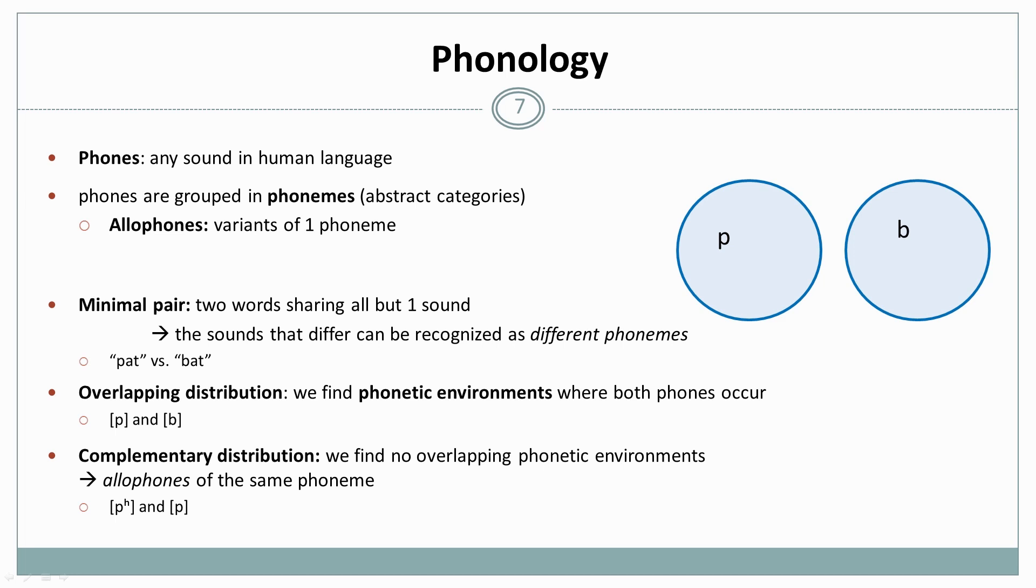So for example, in English, this is the case for the normal p and the aspirated pʰ. So for example, the aspirated pʰ occurs always if the sound occurs at syllable onset and is followed by a stressed vowel. So for example, in pin and in any other case, the non-aspirated p is used. So for example, in spin, the aspirated pʰ and the normal p are indeed in complementary distribution. And that is why we can put it into the same bubble, the same holds for the aspirated b.